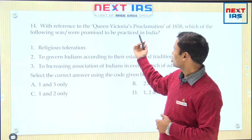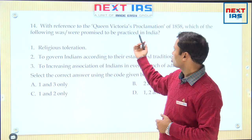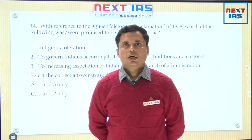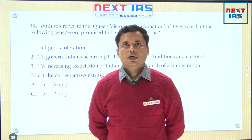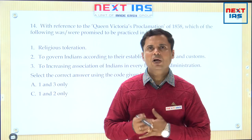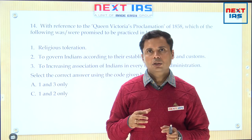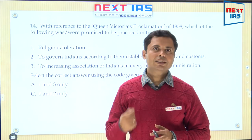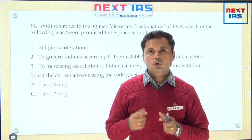Question number 14: with reference to Queen Victoria's Proclamation of 1858, which of the following was/were promised to be practiced in India? Religious toleration; to govern Indians according to their established traditions and customs; and to increase association of Indians in every branch of administration. The British ruled over India for about 200 years — from Battle of Plassey 1757 to 1947. The first 100 years was the rule of the East India Company; in these hundred years you will not find a single year in which Indians had not revolted.